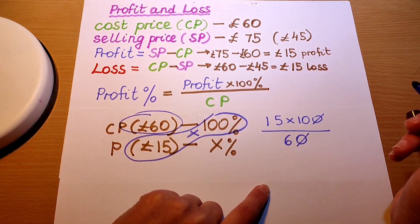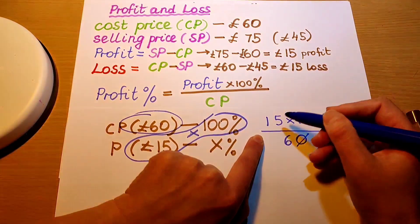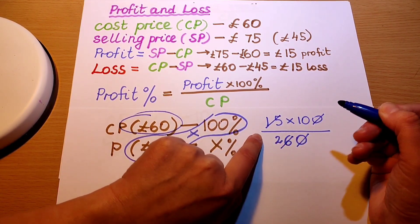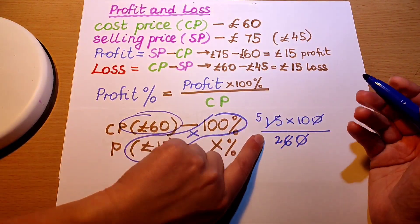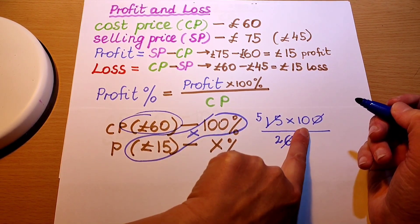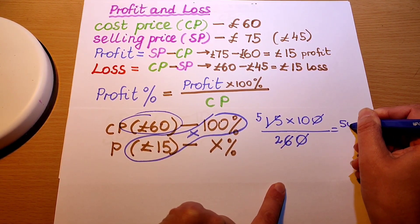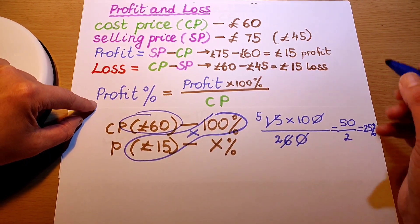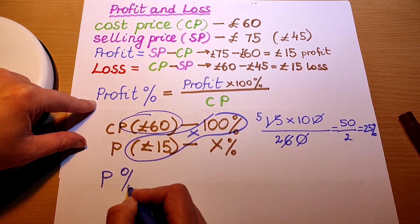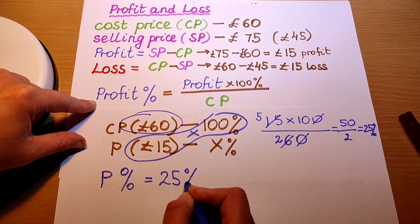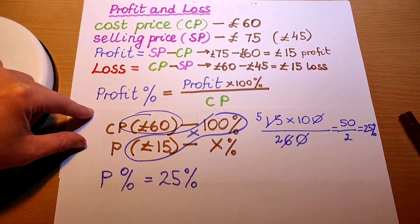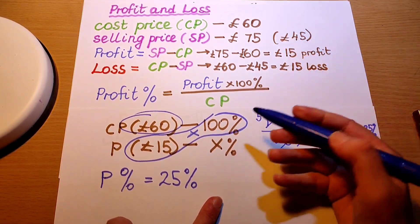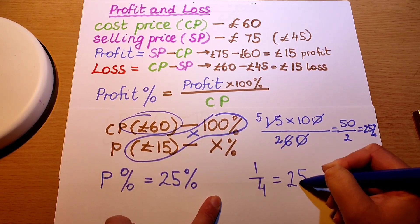Let's reduce it. 15 and 6 — we can divide both numbers by 3. 6 divided by 3 is 2, and 15 divided by 3 is 5. So now we have 5 times 10 is 50, and 50 divided by 2 is 25. So the profit percentage in this case was 25 percent. You can also verify this by knowing that 25 percent is a quarter, and 15 is a quarter of 60, and a quarter is the same as 25 percent.